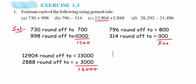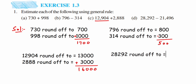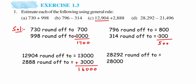Now the last question: we have 28292 minus 21496. We're going to round off to the thousands place. 28292 lies between 28000 and 29000. Since 292 is closer to 0 than 500, 28292 is closer to 28000. So when you round it off, you get 28000.